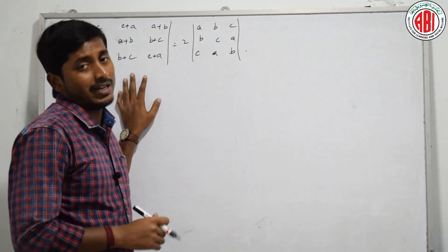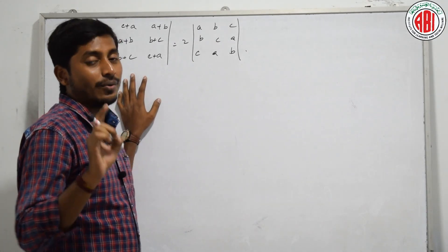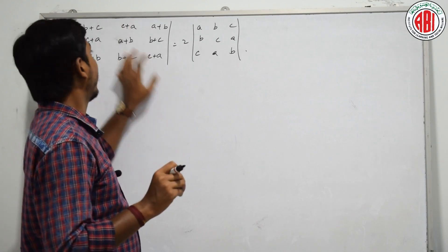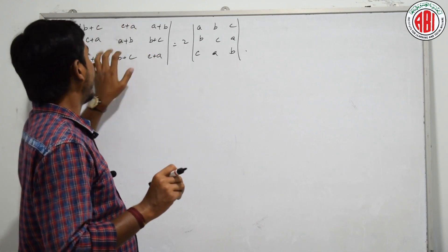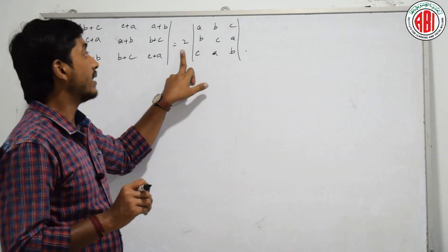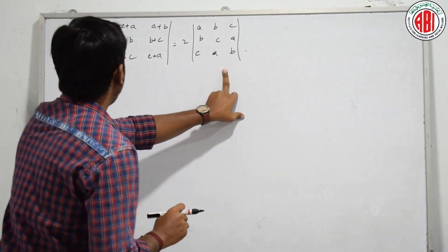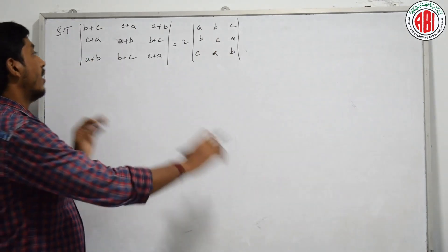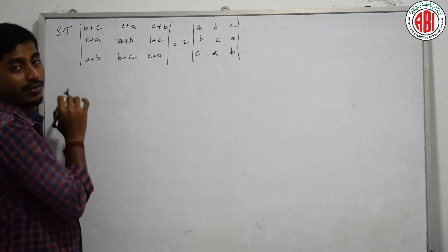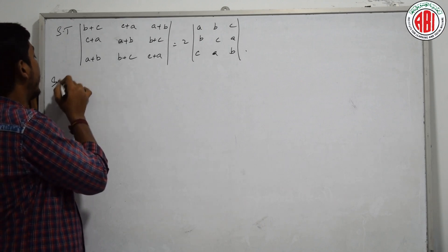This next question is again a different question and easy to solve. Once again, I am telling you — you have to remember the steps. The question: determinant with B plus C, C plus A, A plus B; then C plus A, A plus B, B plus C; then A plus B, B plus C, C plus A — is equal to double of the determinant of A, B, C; B, C, A; C, A, B.